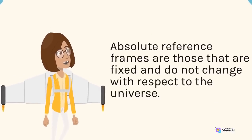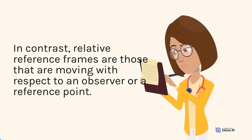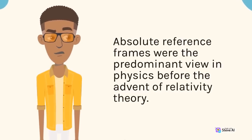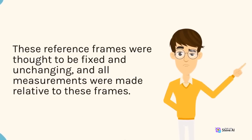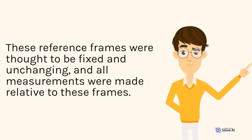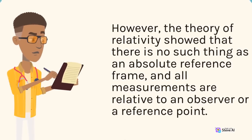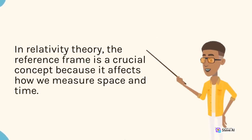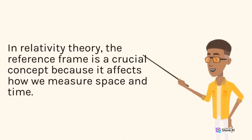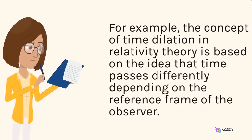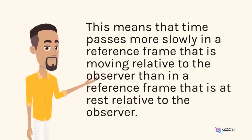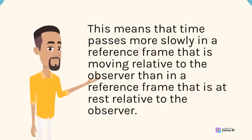Relative reference frames are those that are moving with respect to an observer or a reference point. Absolute reference frames were the predominant view in physics before the advent of relativity theory, with all measurements made relative to these fixed frames. However, the theory of relativity showed that there is no such thing as an absolute reference frame, and all measurements are relative to an observer or a reference point. In relativity theory, the reference frame is a crucial concept because it affects how we measure space and time. For example, the concept of time dilation is based on the idea that time passes differently depending on the reference frame of the observer — time passes more slowly in a reference frame that is moving relative to the observer.